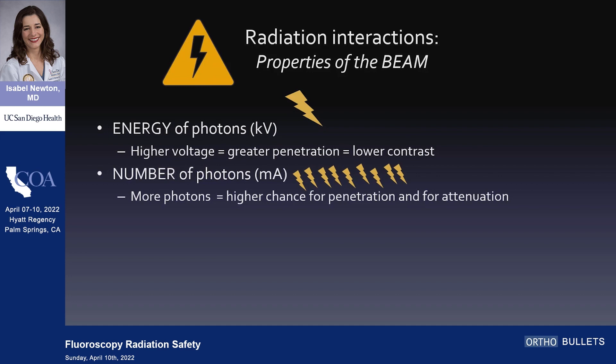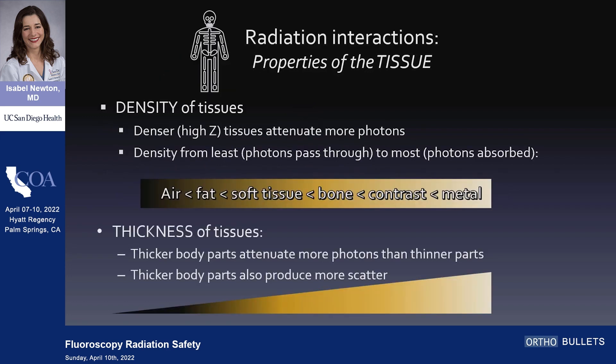When we talk about properties of the beam, it's important to understand two concepts. One is the energy of the photons, described as the KV. Higher voltage means greater penetration, so all the photons are going to get there and you'll have lower contrast — if all photons get there, you've got no image. So you want the differential arrival of these photons. Then there's the number of photons, that's the MA. More photons means a higher chance for some to reach the detector, but also a higher chance of attenuation.